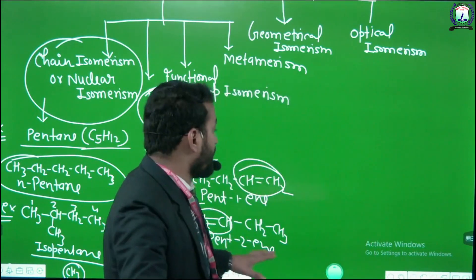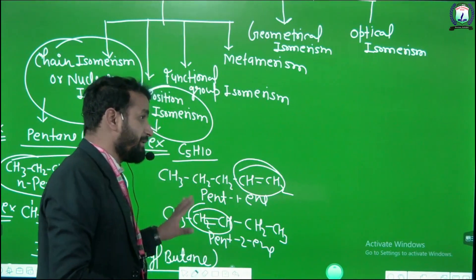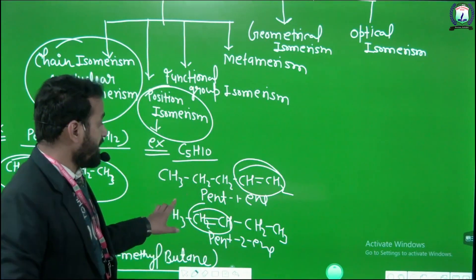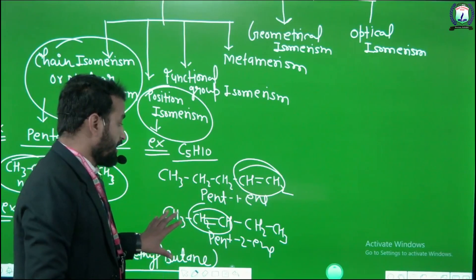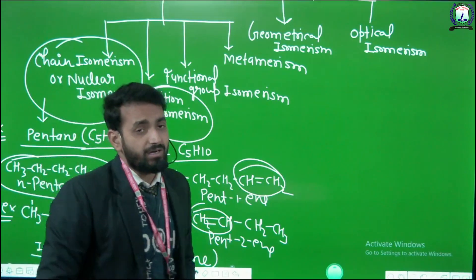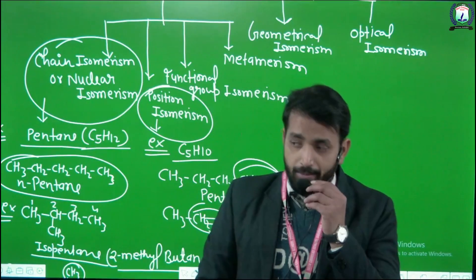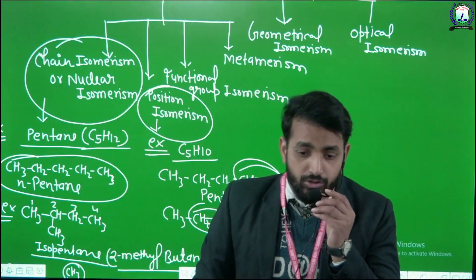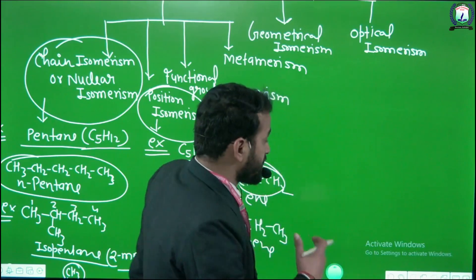The second structure, pent-2-ene, is: CH3-CH2-CH=CH-CH3. Here you can see the double bond — which is itself a type of functional group — is at the second position rather than the first. When the position of the functional group changes, this is position isomerism.